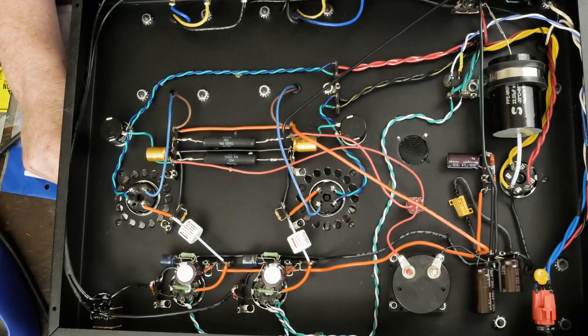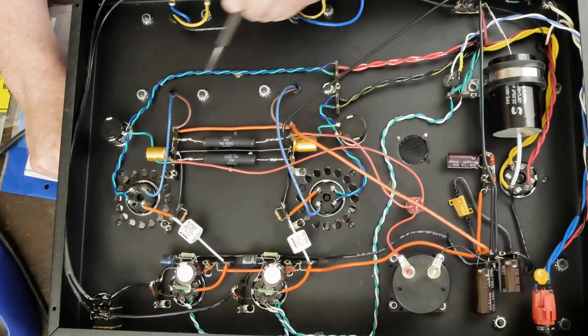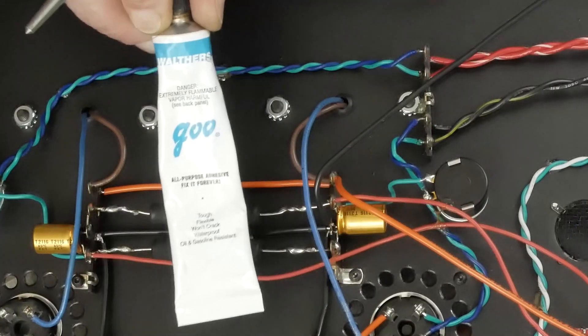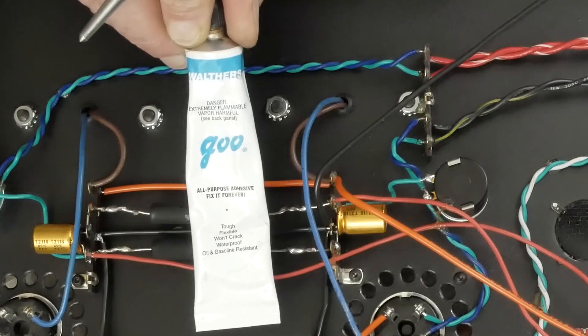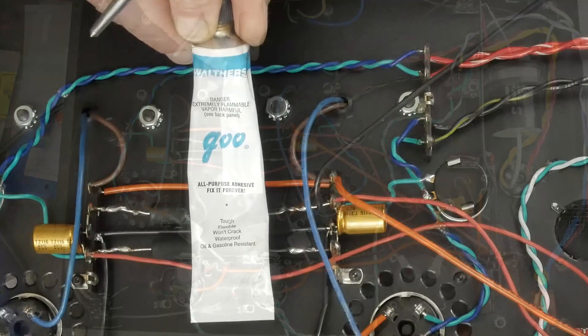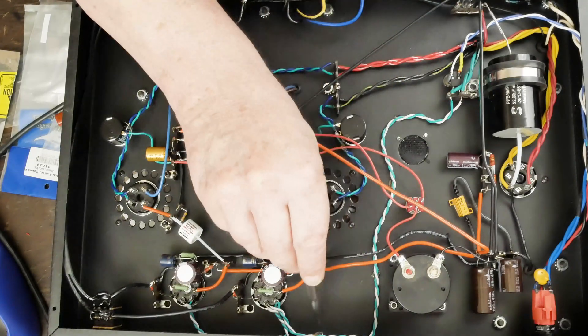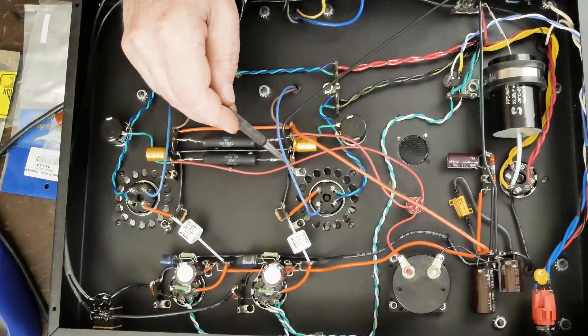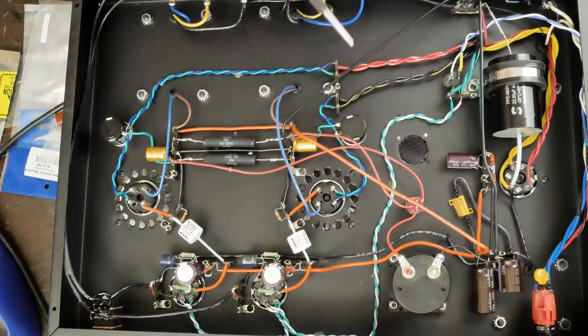One of the things I do in my amps - for things like this heater wiring and these long runs - I get a little bit of contact adhesive. This is a brand I really like called Walter's Goo. It's like a rubberized contact cement. I learned about this stuff from my model train hobby. This is some really good contact cement that stays flexible. So I put a little dab here, put a couple dabs along on this heater to make sure they stay in place.